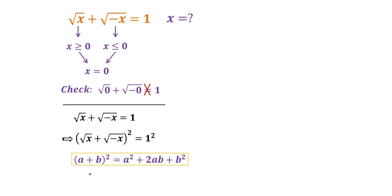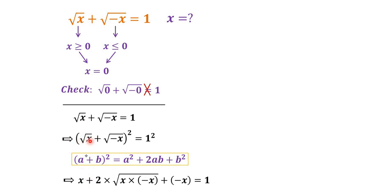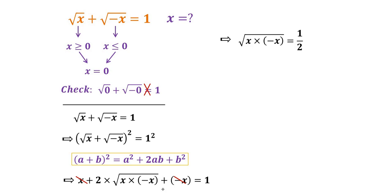We apply the rule (a + b)² = a² + 2ab + b². So the equation becomes: x plus 2 times square root of x times square root of negative x, plus negative x, equals 1. The x and negative x cancel, and we have square root of (x times negative x) equals 1 over 2.